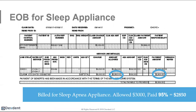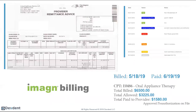How are we going to get paid for this? We suggest having a discounted cash price and then an insurance option — billing medical insurance. Oral appliances are not covered by dental insurance; there are no codes for that. But a diagnosed patient can absolutely be billed to medical insurance — it's one of the easier procedures to bill. Here's an EOB where the office charged $3,000, insurance allowed $3,000, and paid at 95%. Here's another where the office billed $6,500 — co-insurance still comes into play, but the insurance paid $1,580, reducing the patient's portion.